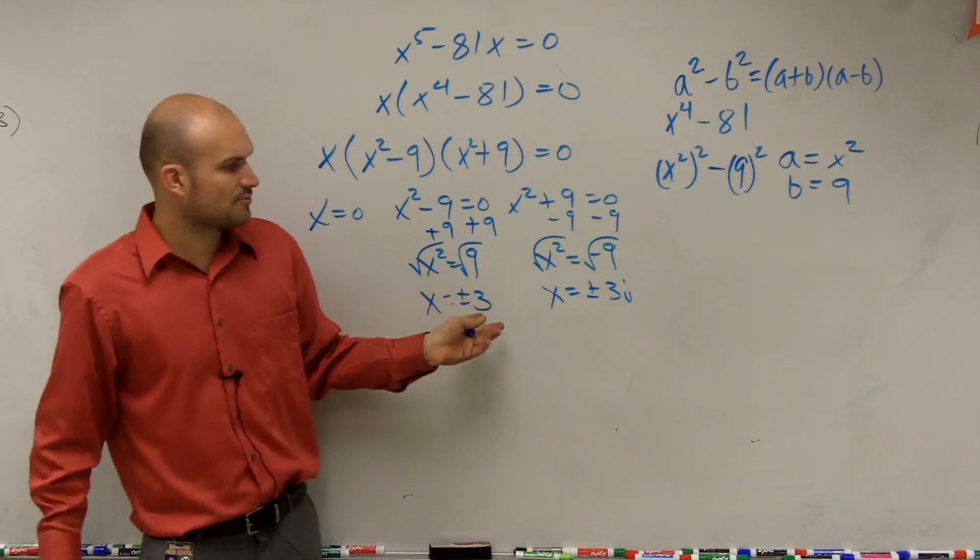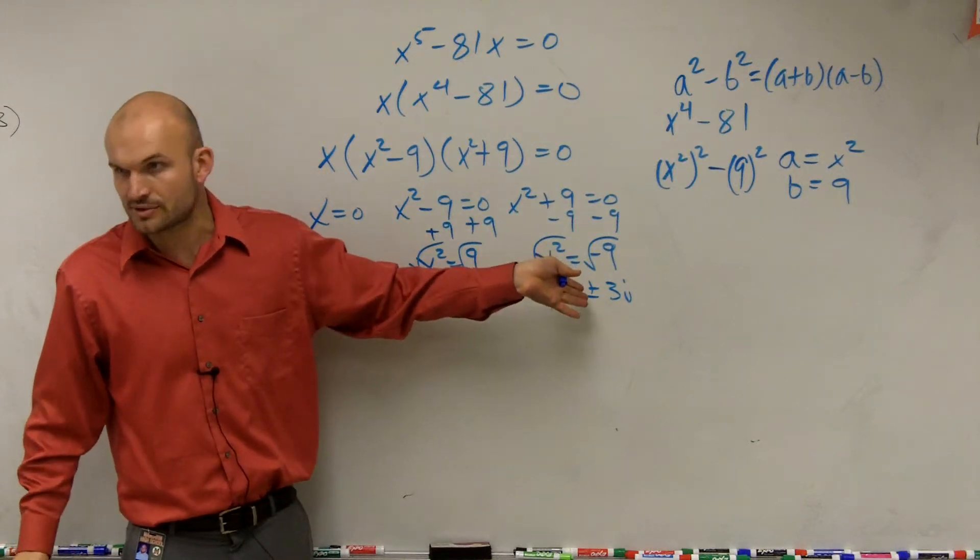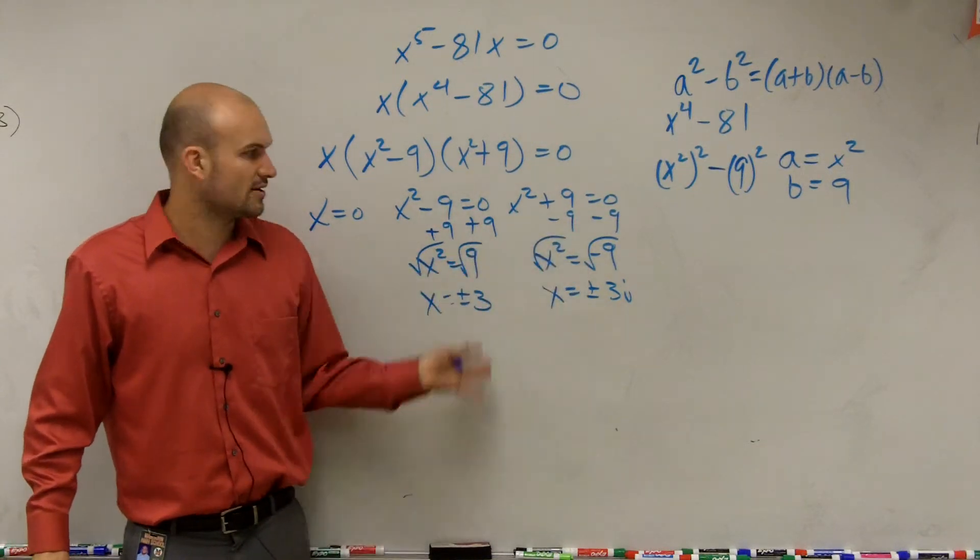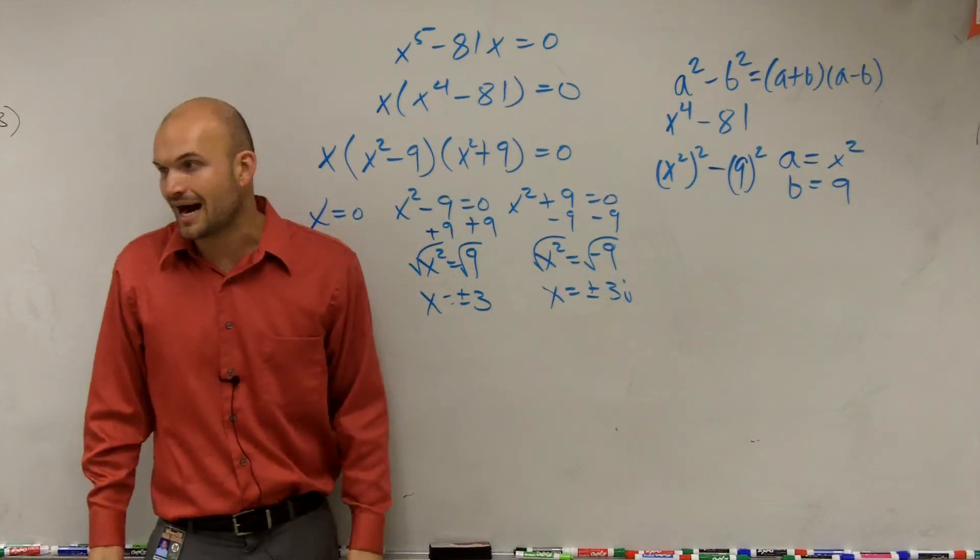Notice the difference with the plus or minus 3i. When you take the square root of a negative number, you're going to have the i.